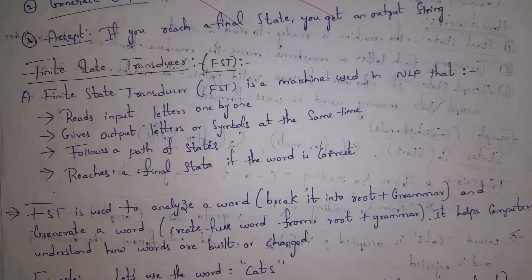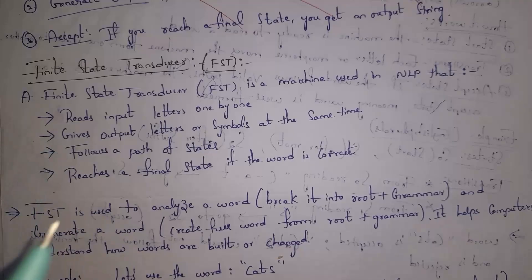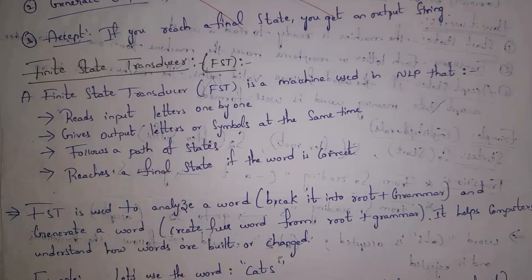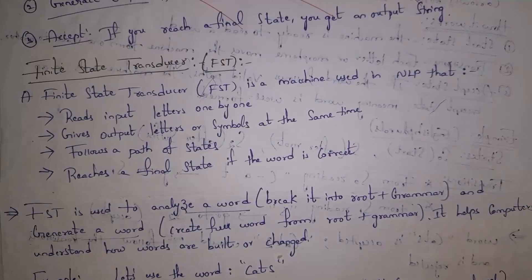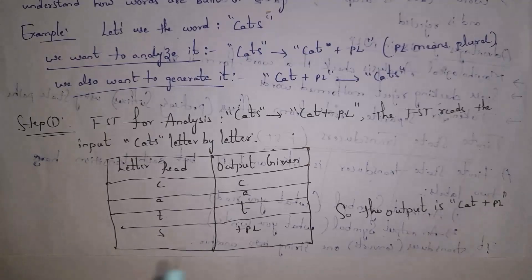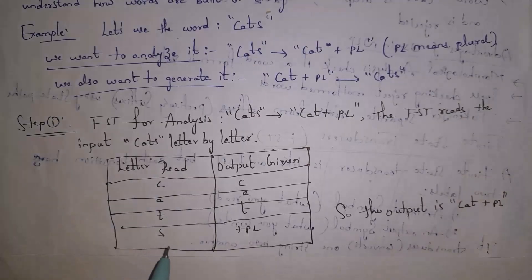Next, finite state transducers (FST). An FST is a machine used in NLP that reads input letters one by one and produces output in the form of letters or symbols. It follows states — when a word is correct, the model reaches the final state; otherwise it does not. FSTs mainly perform two operations: analyze a word and generate a word. For analyzing, when I give 'cats', it reads c, a, t, s, and after reading 's' it understands that 's' marks plural, so it outputs 'cat + plural'.